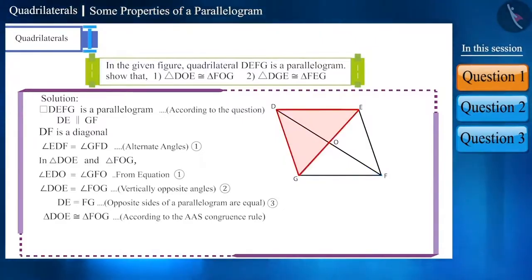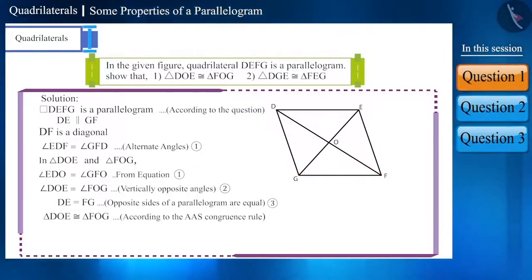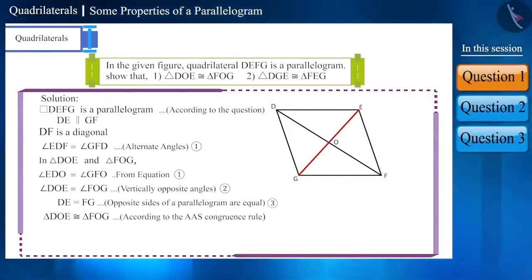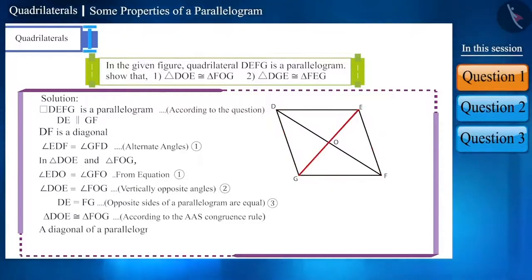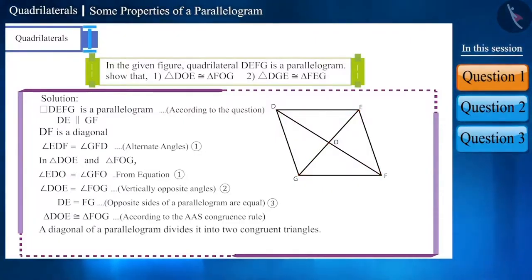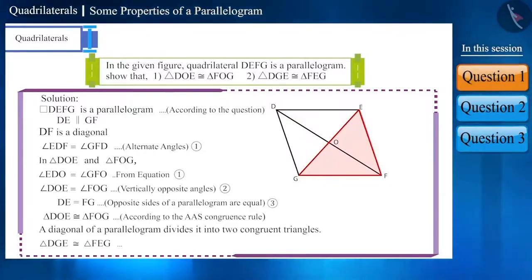Now look at triangle DGE and triangle FEG, both of which are derived by dividing the parallelogram DEFG by diagonal GE. We know that a diagonal of a parallelogram divides it into two congruent triangles. Therefore, these two triangles will be congruent.